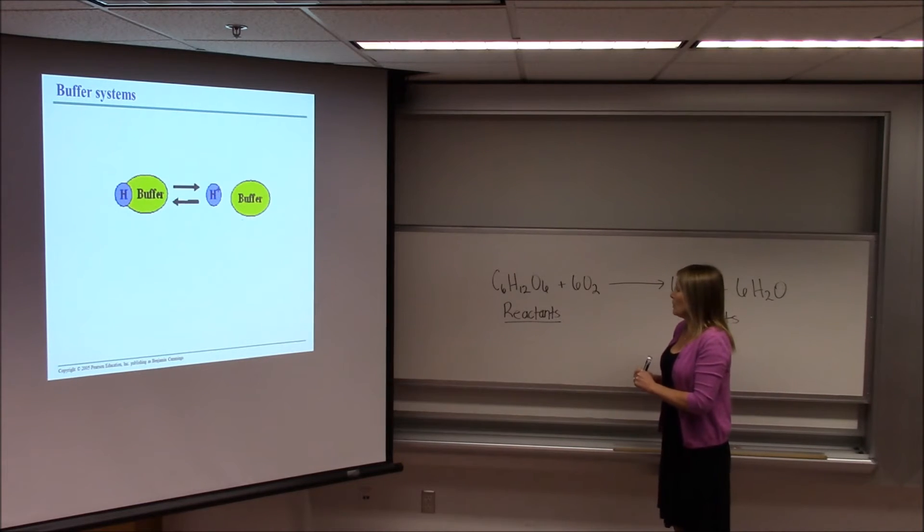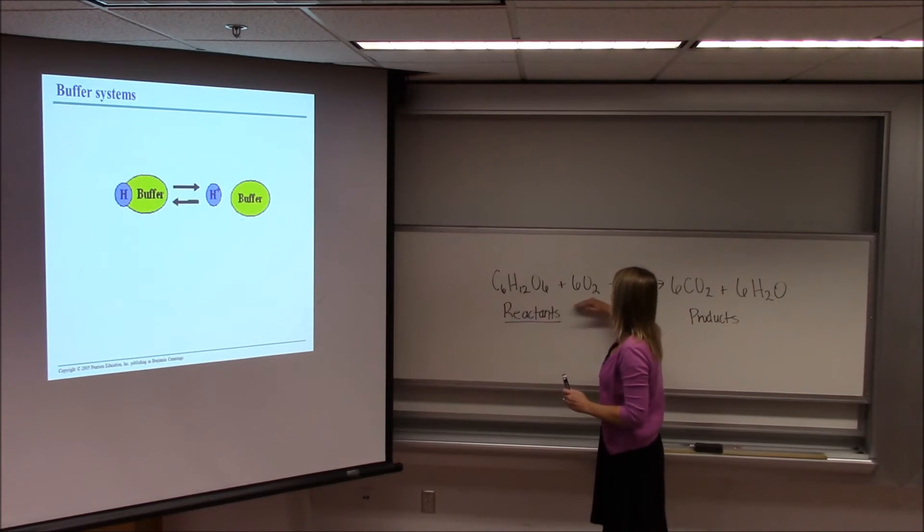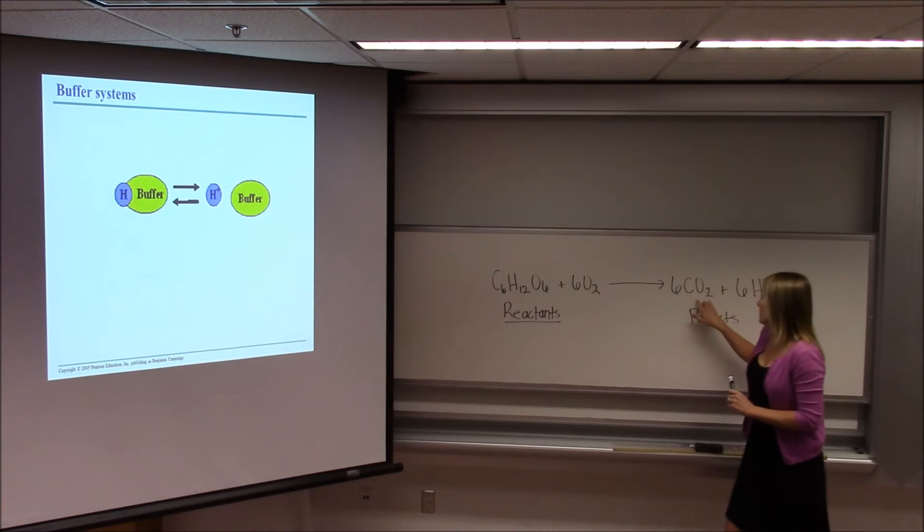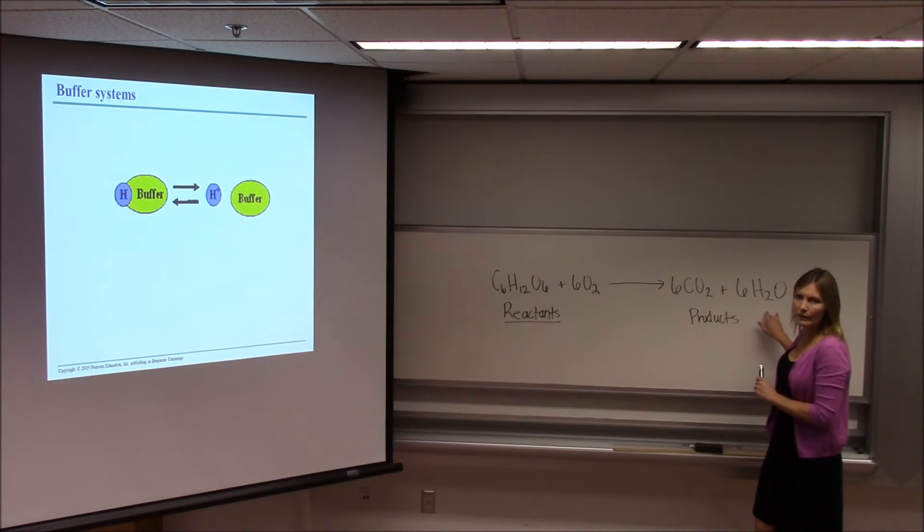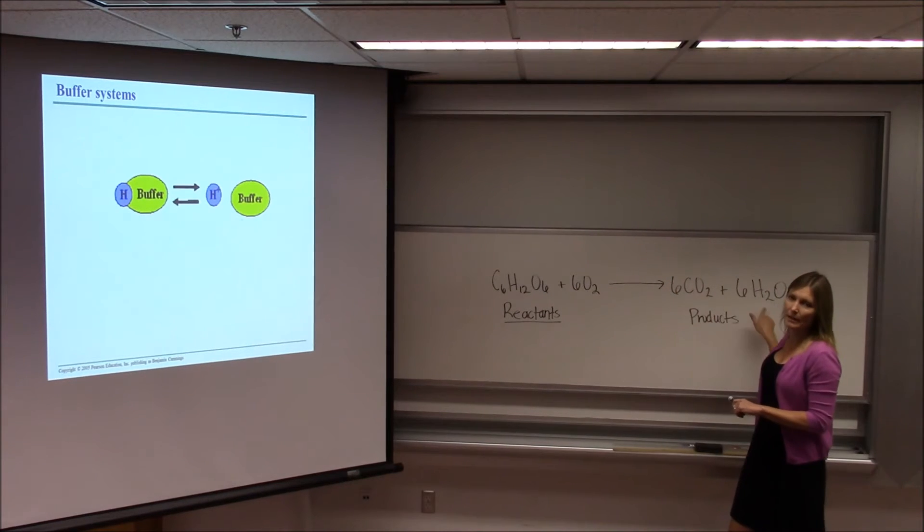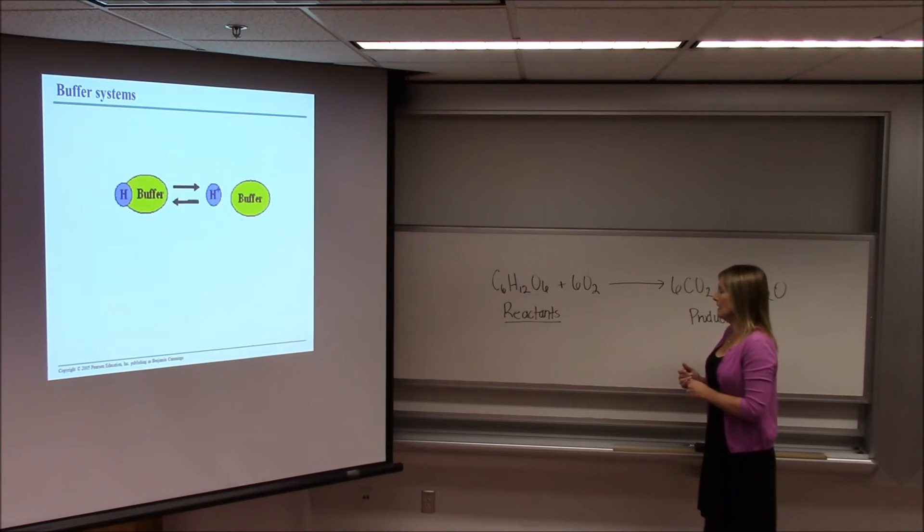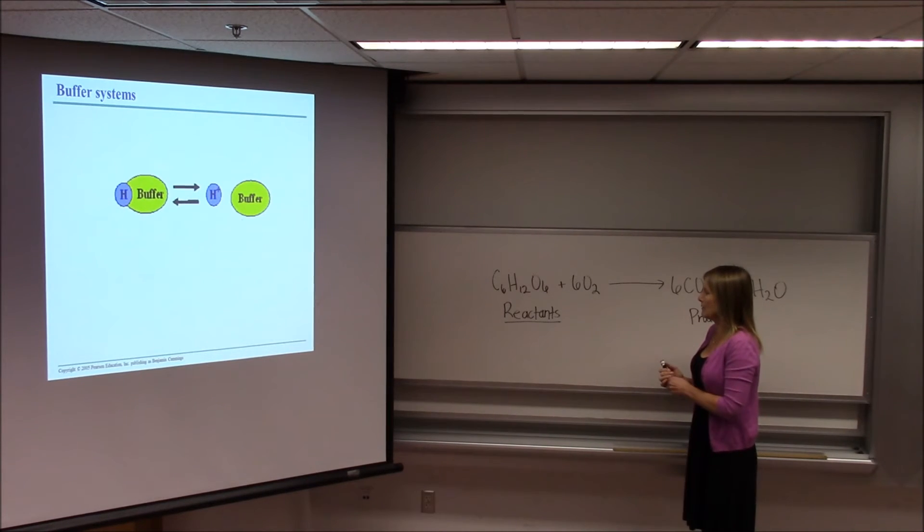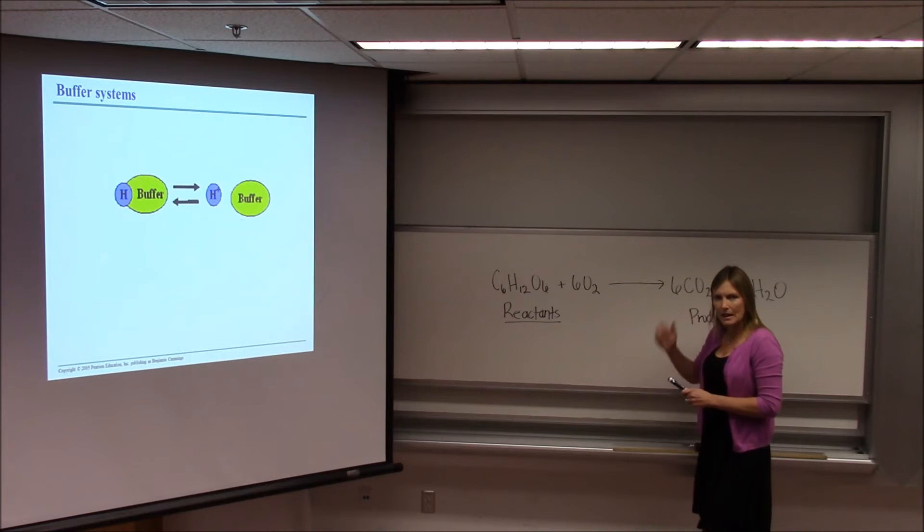That's pretty amazing because if you think about it, glucose and oxygen are very different from carbon dioxide and water. In fact, I can get energy from this glucose. I can't get energy from carbon dioxide and water. So while they are very different, once you rearrange those atoms, the number of each type of atom on each side is the same.